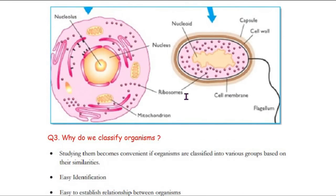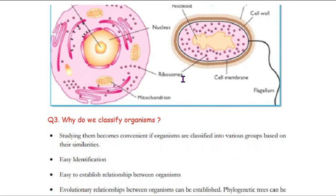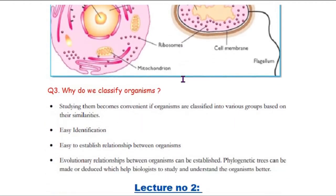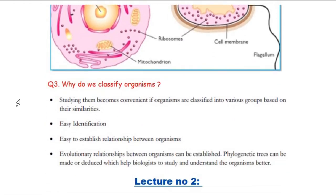This is a prokaryotic cell and this is a eukaryotic cell. A eukaryotic cell has a well-defined nucleus, but a prokaryotic cell does not have a well-defined nucleus. This brings us to why we classify organisms.